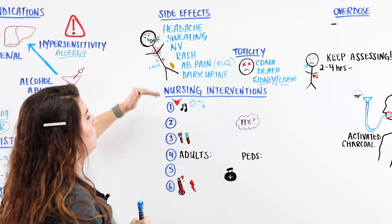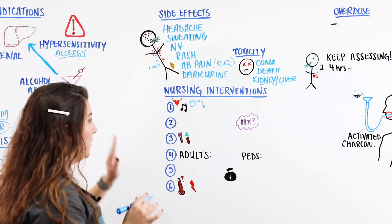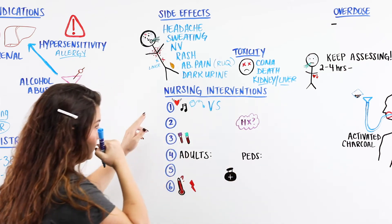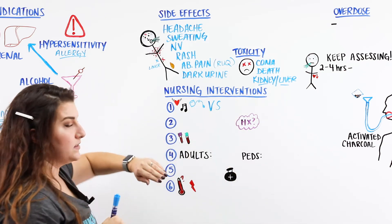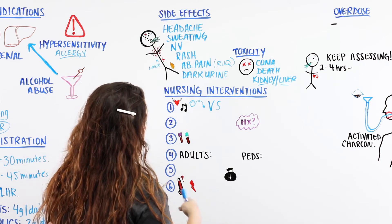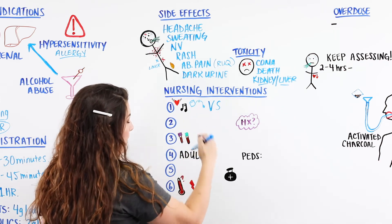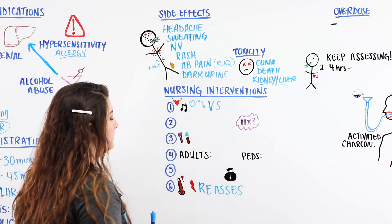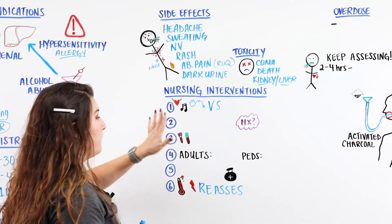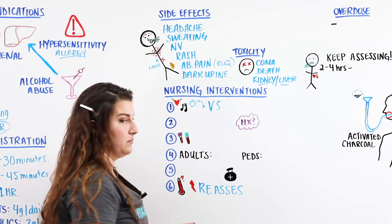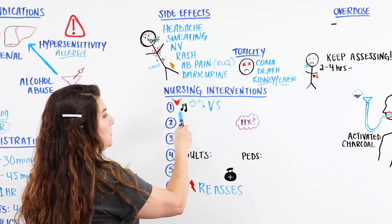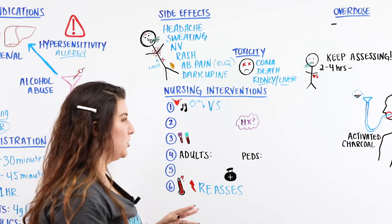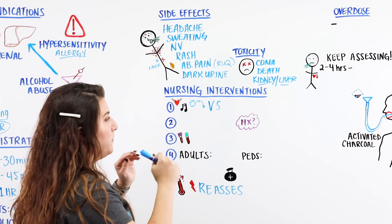For nursing interventions, we want to make sure we're not reaching toxic levels. First, monitor vital signs. We're always reassessing the patient — if Tylenol was given for pain or fever, we reassess continuously. We don't just check temperature or pain; we also check heart rate, blood pressure, and lung sounds, because pain or fever is often secondary to an underlying condition like an infection.